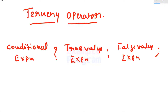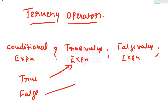Here we have the colon separating the true and false value expressions, and a semicolon at the end. If the conditional expression evaluates to true, the true value expression part is executed; if false, the false value expression part is executed. You can also nest the ternary operator inside the true value expression or the false value expression part, and we will be doing that in this video.